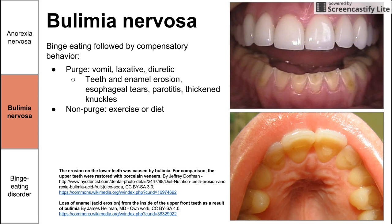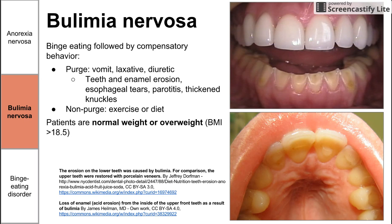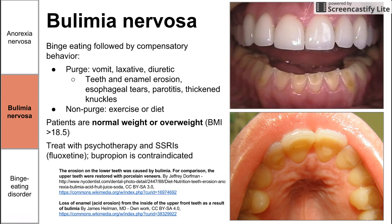There's also a non-purge type in bulimia, involving excess exercise and dieting, just like in anorexia. The key difference between bulimia and anorexia is that patients with bulimia are normal weight or overweight — BMI greater than 18.5. To treat bulimia, psychotherapy is primary; SSRIs like fluoxetine are effective. Bupropion is contraindicated in both bulimia and anorexia because it lowers the seizure threshold, and patients with electrolyte disturbances are already predisposed to seizures.